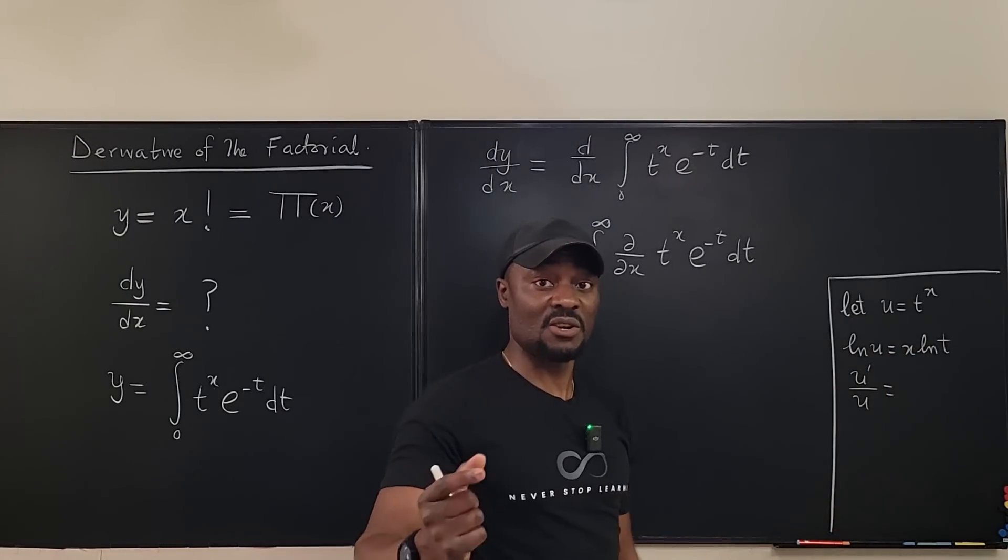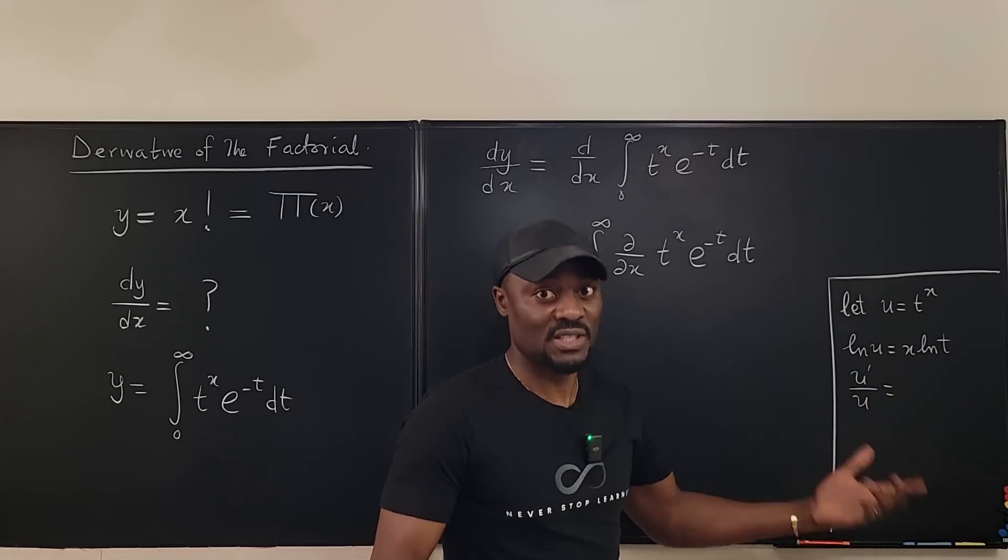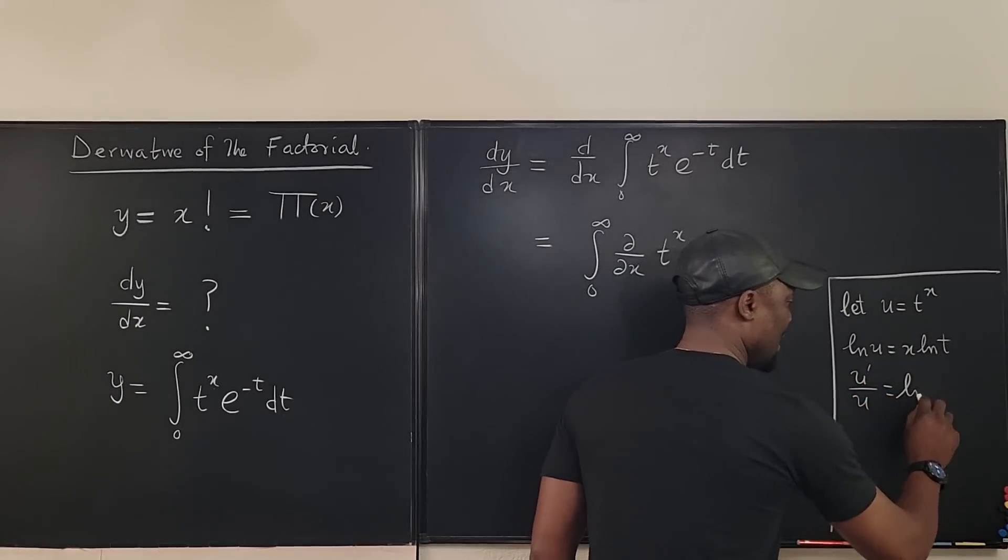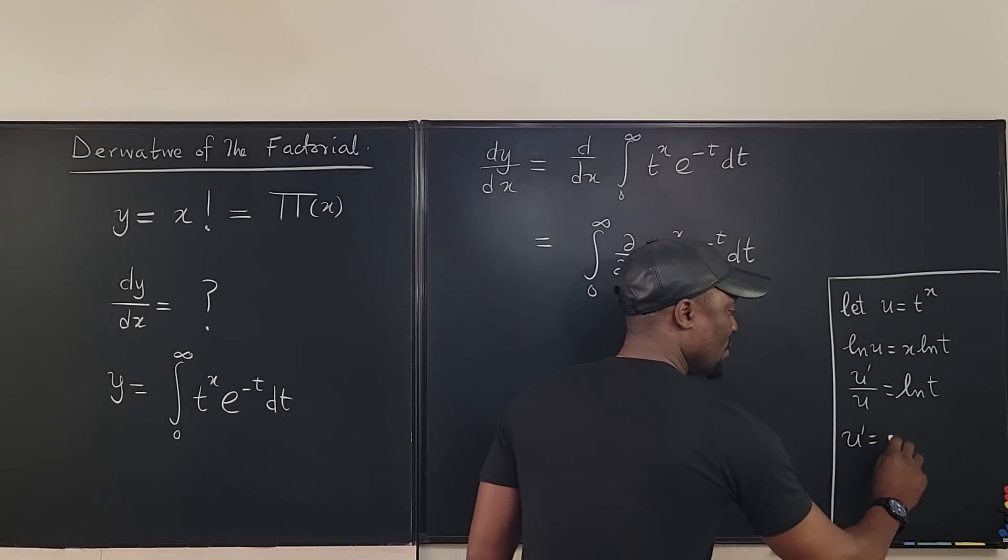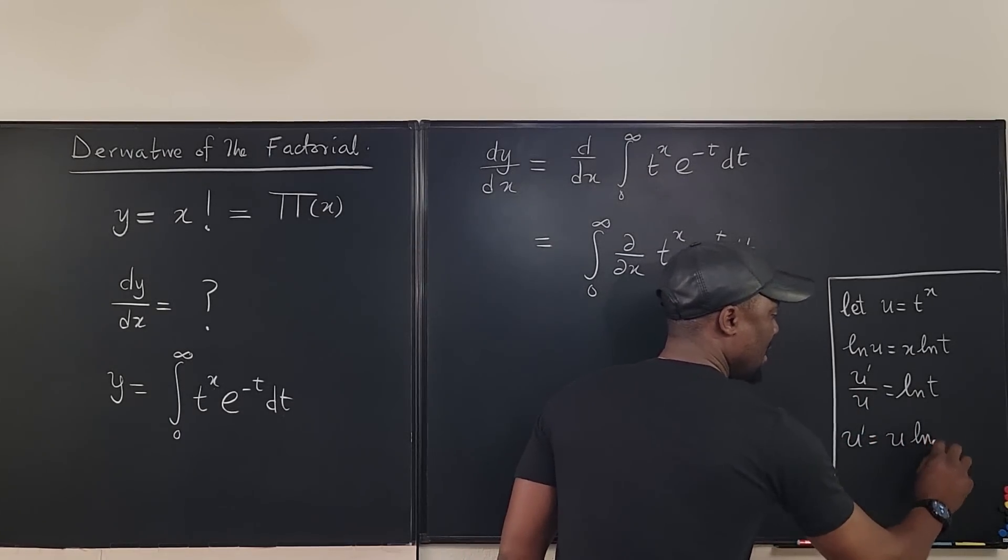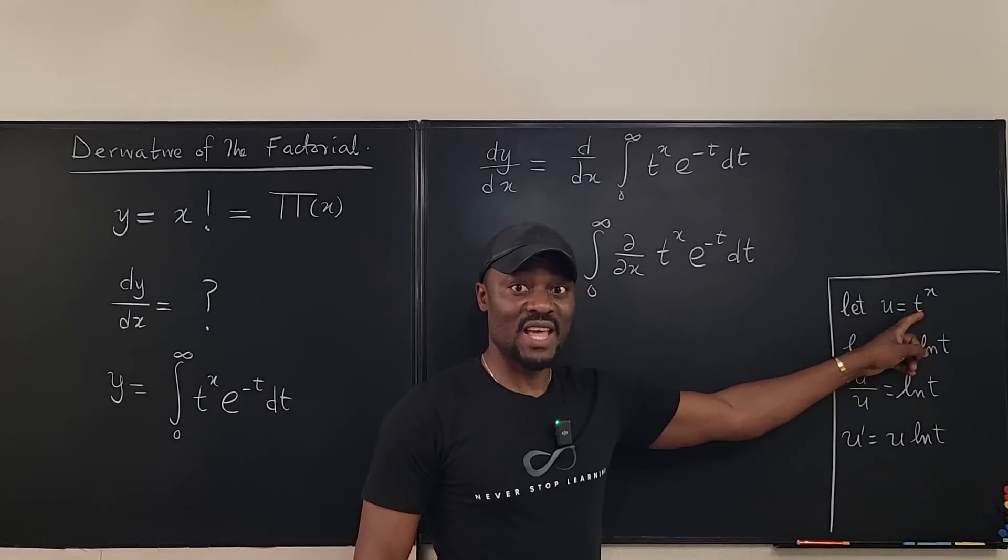If you differentiate 3x, your answer is going to be 3. If you differentiate ln t times x, your answer is going to be just ln t. So our answer is ln of t. So that our u prime will be equal to u times ln of t. But what did we say u was again? t to the x.